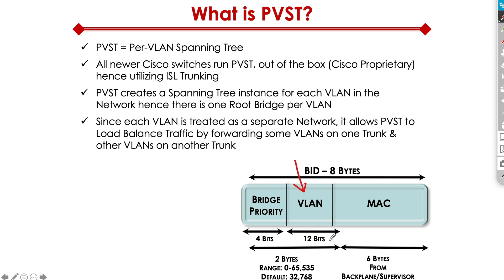It's a 12-bit field. Altogether, the bridge priority still ranges from 0 through 65,535. We typically use the default value of 32,768 on all the switches. The MAC address is derived from the backplane on fixed switches, and from a supervisor module on the modular switches.